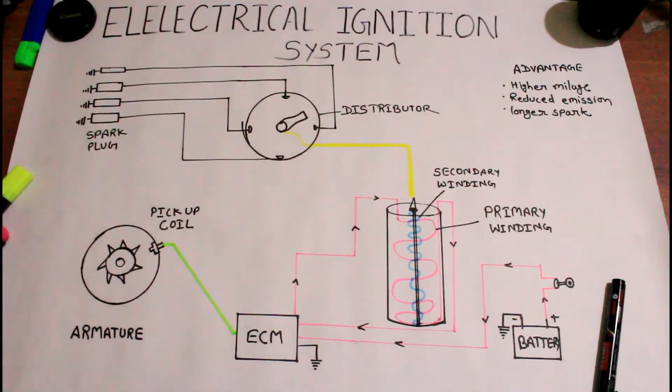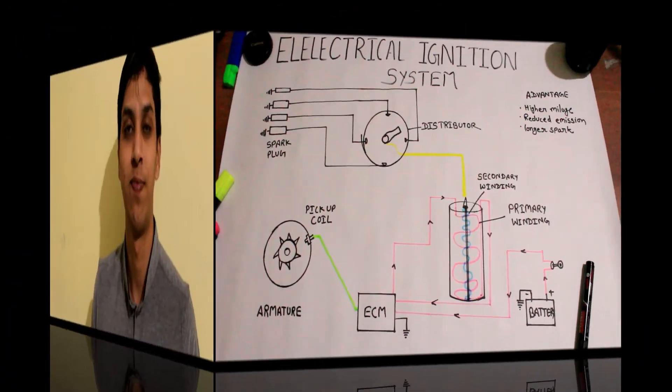This longer spark is very important for the lean mixture. If you are using lean mixture, the electrical ignition system is essential for that.